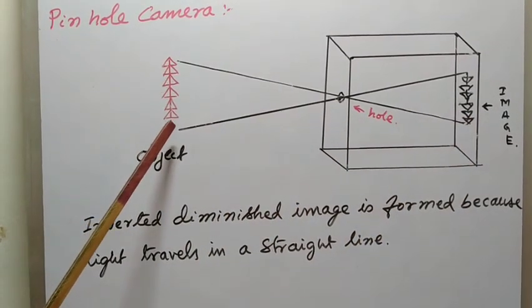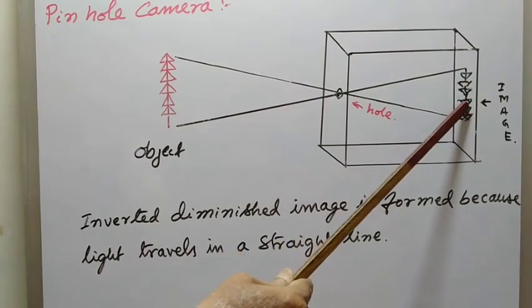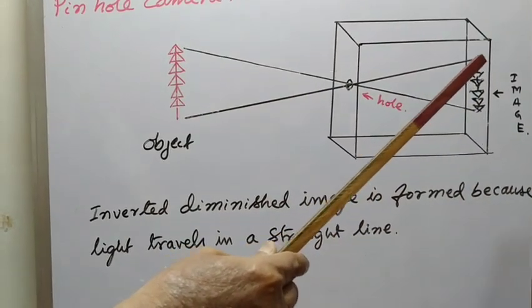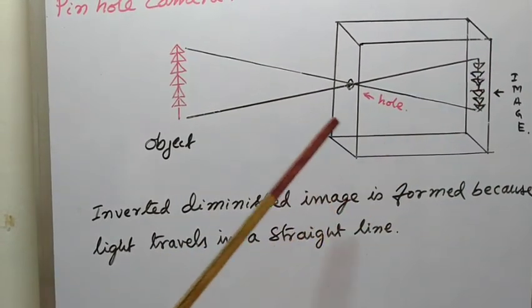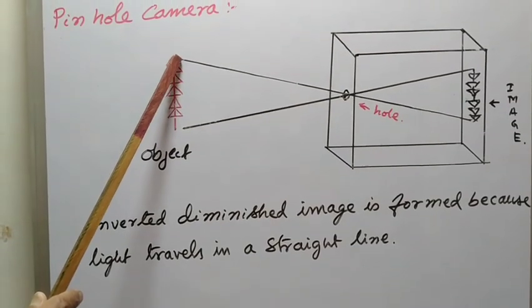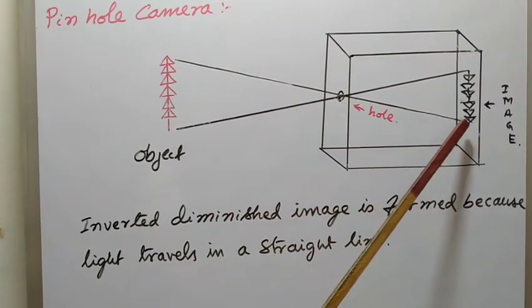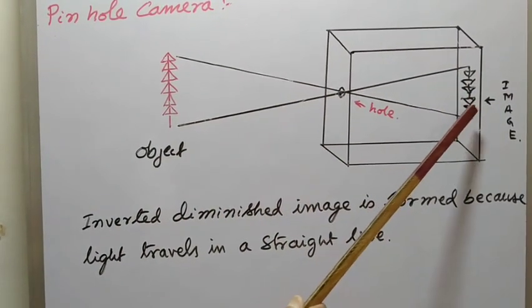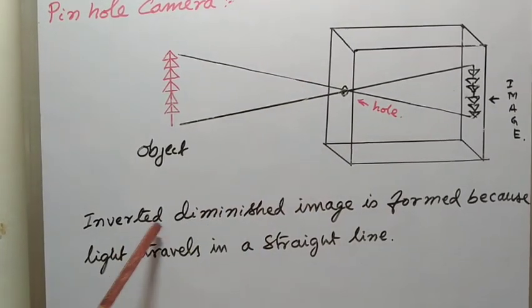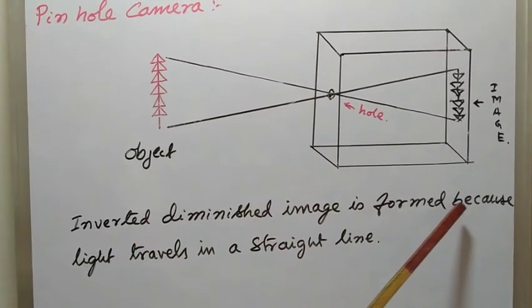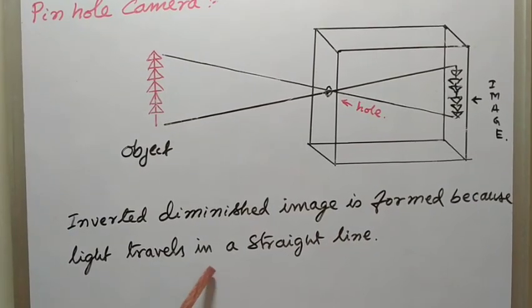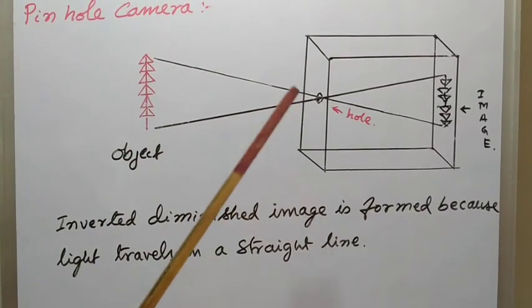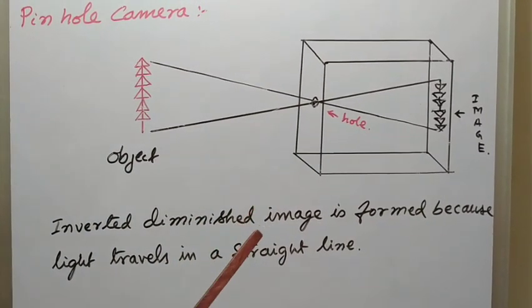If the object is inverted, an erect image is formed on the screen and it is diminished. Why is this diminished and inverted? Because the light rays from this point come like this and from this point come like this. So, an inverted image is formed. This shows that an inverted, diminished image is formed because light travels in a straight line. That is the example: pinhole camera shows that light travels in a straight line.